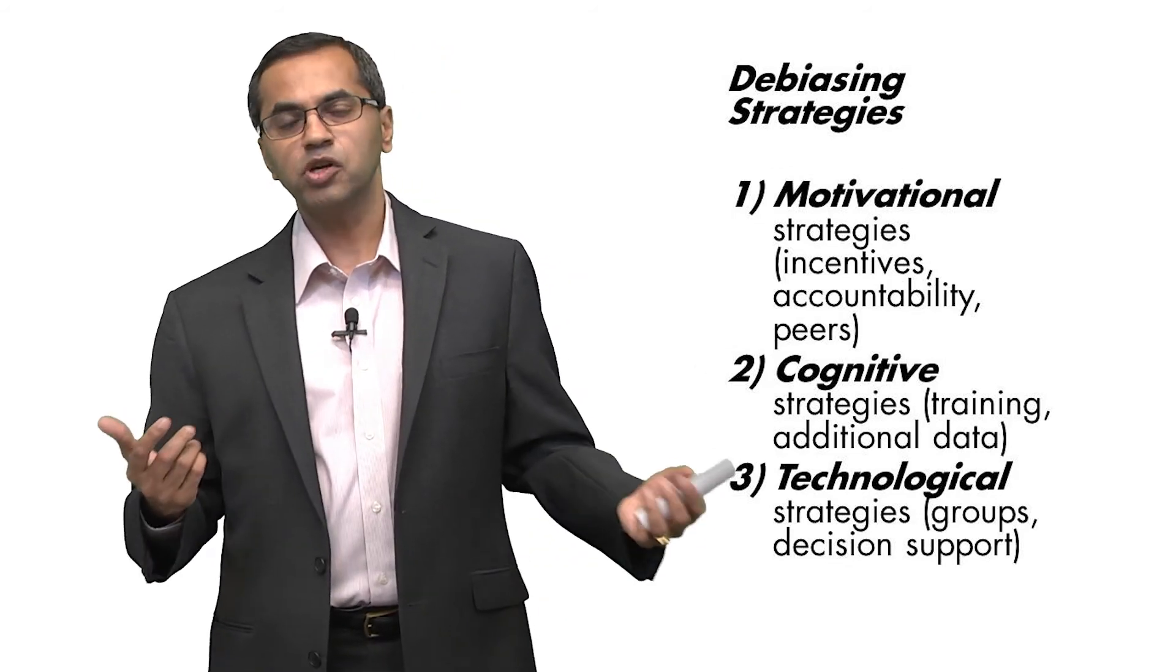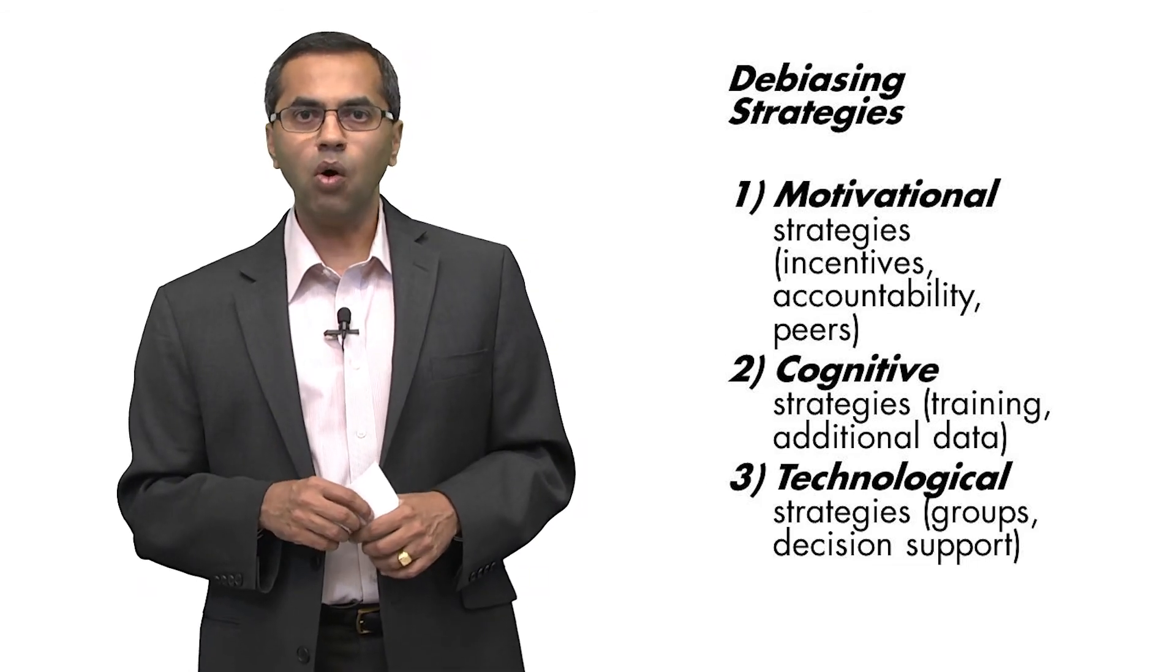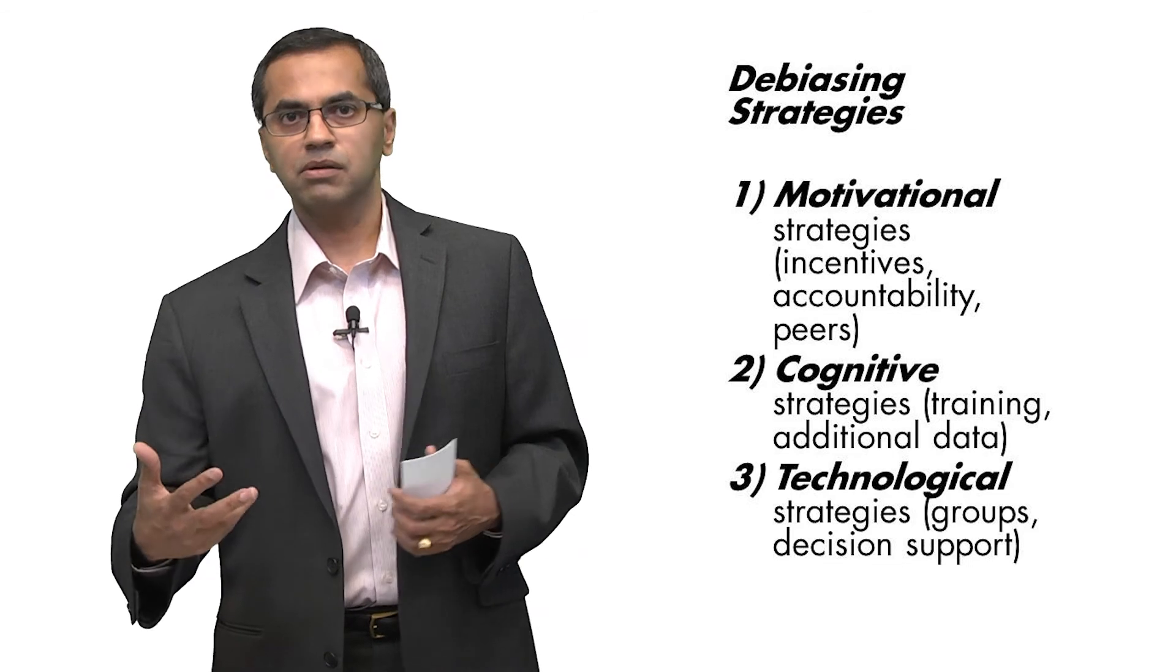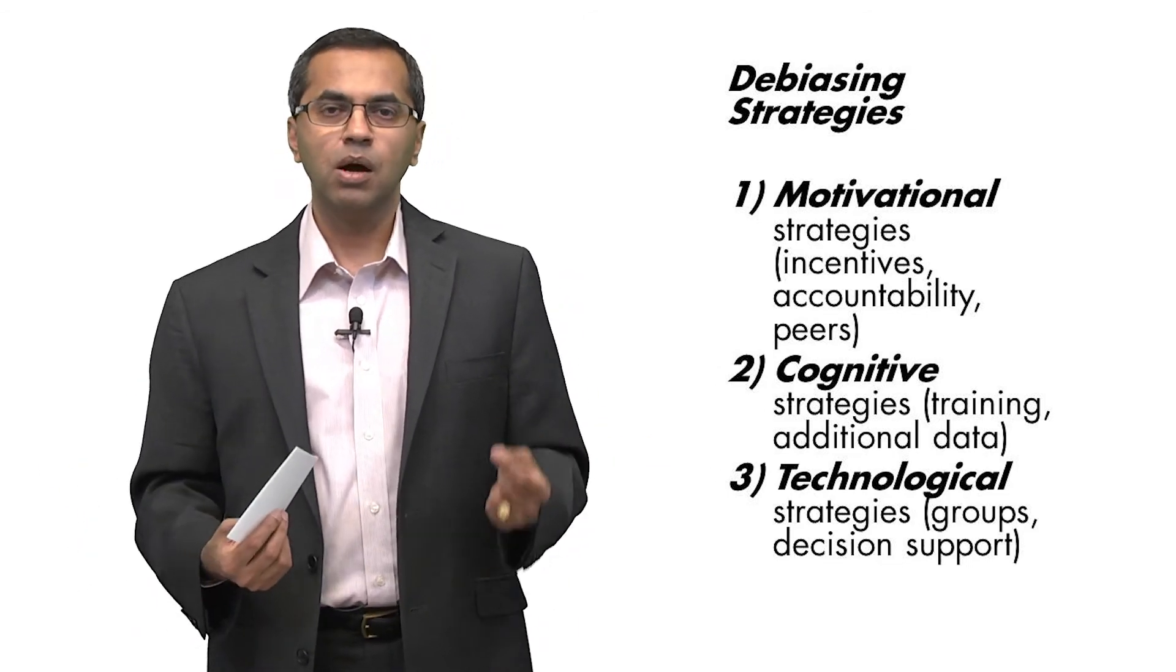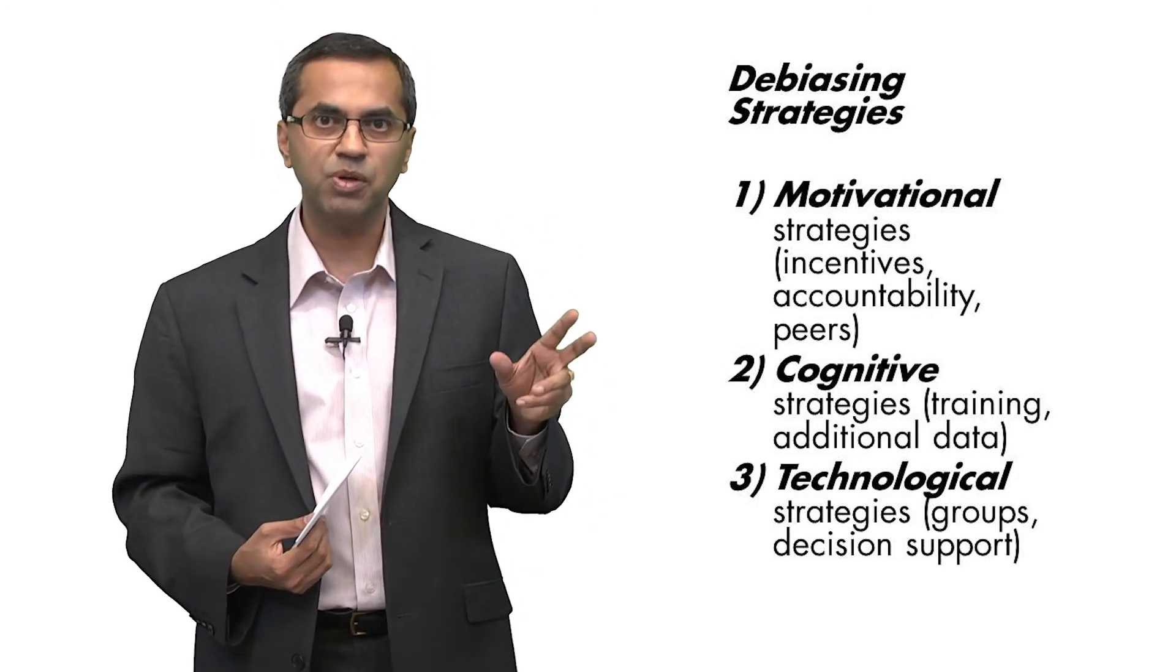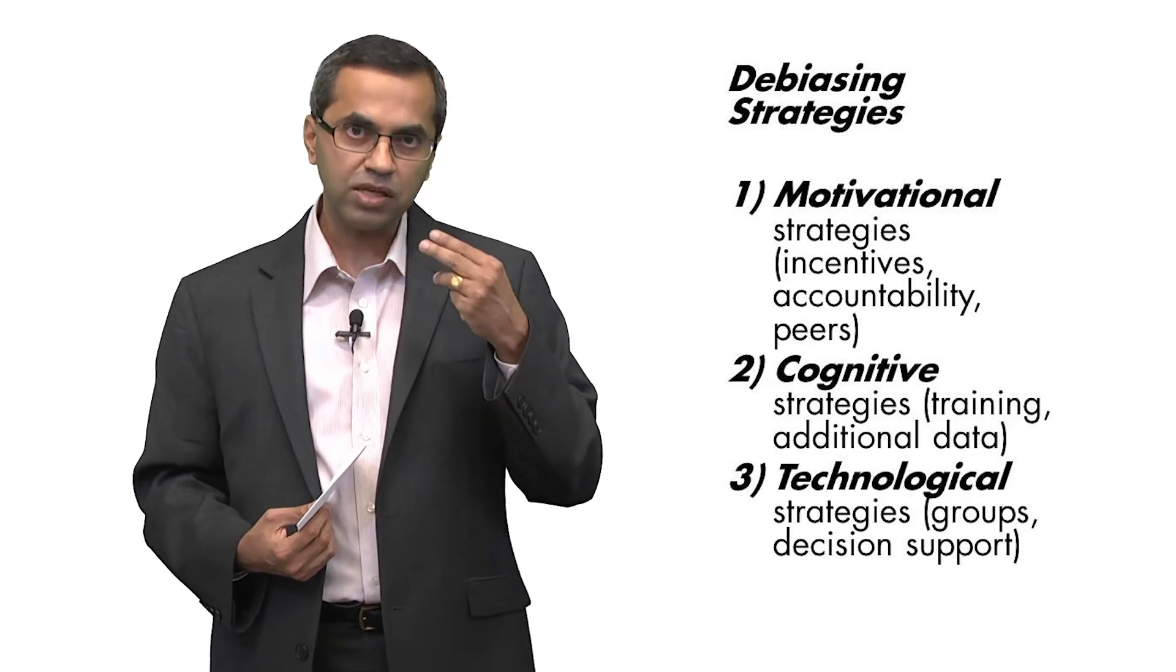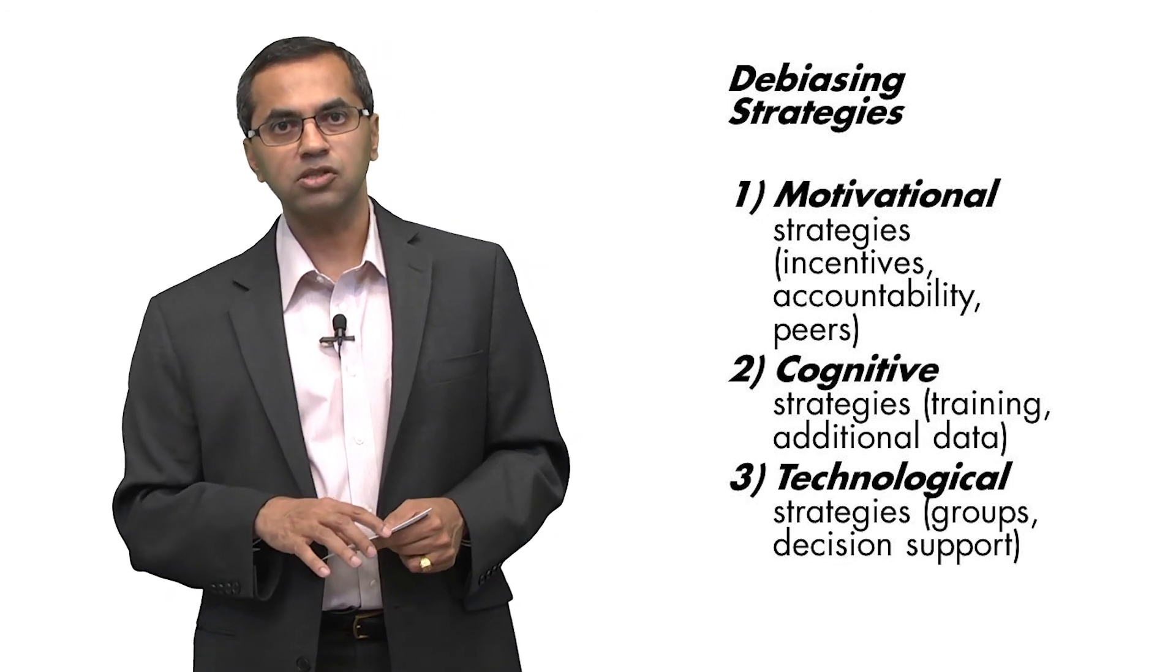How do we motivate people? You could give them financial incentives. You could give them economic incentives. Or you could respond to their sense of being socially correct, put peer pressure, have them make public commitments. Once there is some external stimulus that gets people to be more motivated to be accurate, they are more likely to process information more effortfully and to draw more information into their decision.